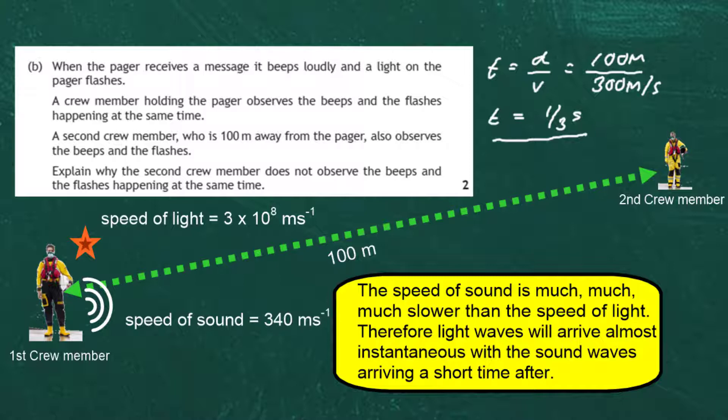Now a short movie made at school demonstrates this experimentally. It involves a special device called a flash-bang device. Sit back and watch the experiment — a race between the speed of light and the speed of sound.